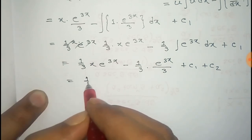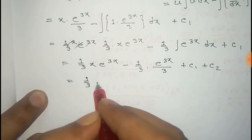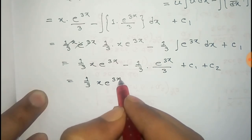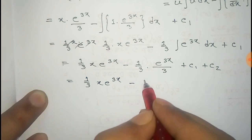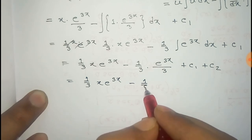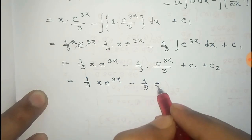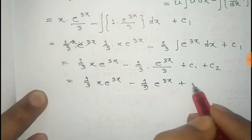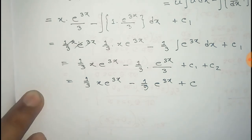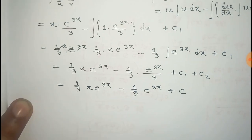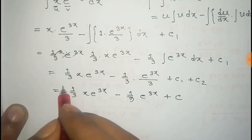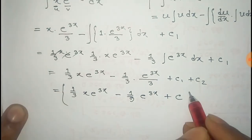That gives us (1/3)·x·e^(3x) minus (1/9)·e^(3x). We combine the two constants c1 and c2 into a single new constant c. Thus the integral of x·e^(3x) dx equals (1/3)·x·e^(3x) − (1/9)·e^(3x) + c.